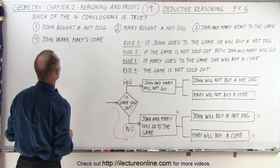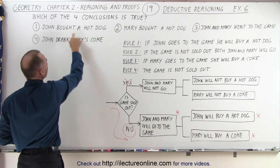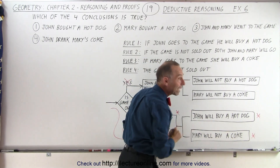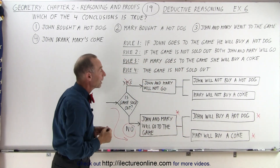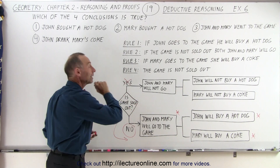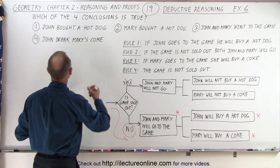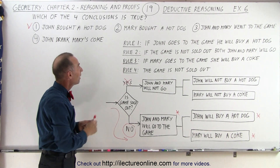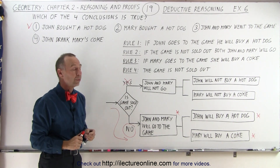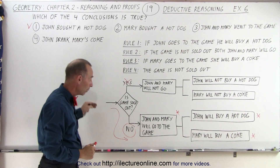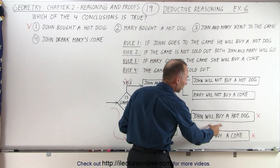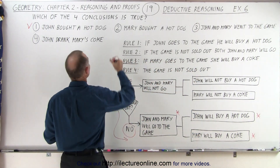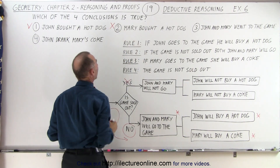Which of these four statements are true? John bought a hot dog — yes, that is indeed true, because John went to the game, and when he went to the game, he will buy a hot dog based on the fact that the game was not sold out. So this first one is indeed a true statement. Secondly, Mary bought a hot dog — we see that John bought a hot dog, but Mary will buy a Coke. So that's not a true statement; Mary does not buy a hot dog.